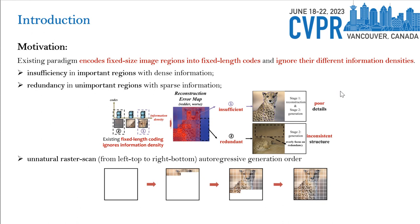Moreover, fixed-length coding leads to an unnatural raster scan autoregressive generation order. Since all regions are encoded into fixed-length codes, there is no way for the second stage to distinguish their different importance.